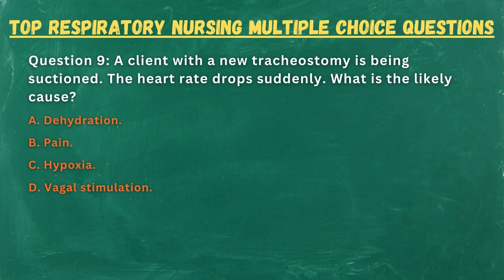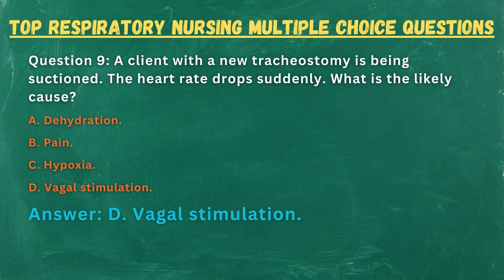Question 9. A client with a new tracheostomy is being suctioned. The heart rate drops suddenly. What is the likely cause? A. Dehydration. B. Pain. C. Hypoxia. D. Vagal stimulation. Answer: D. Vagal stimulation.